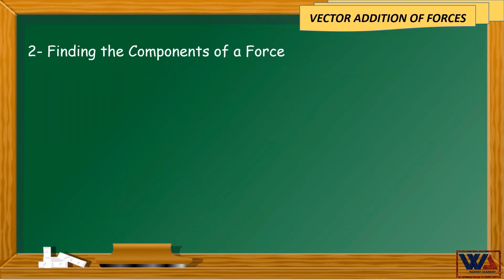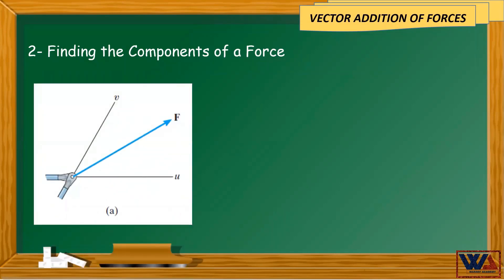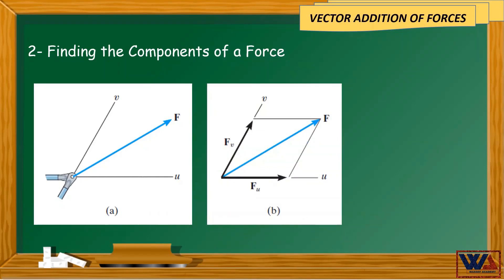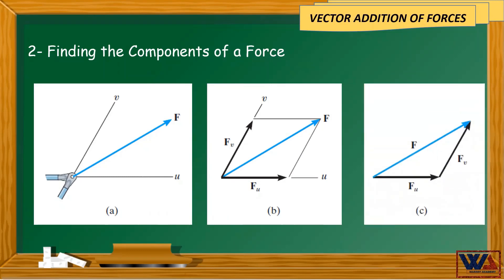To find the components of a force, consider the following example. We have the force F, and we need to find the component FU along the U-axis and FV along the V-axis. To do that, from the ending point or head of force F, draw lines parallel to axes U and V to get a parallelogram shape as shown in figure B. Then select one of the two triangles that form the parallelogram, as shown in figure C.